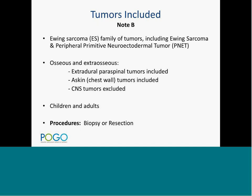Included under the current protocol is the Ewing sarcoma family of tumors, which includes Ewing sarcoma and peripheral primitive neuroectodermal tumors (PNET). The same protocol covers tumors arising from bone as well as those arising outside of bone, including soft tissues, chest wall tumors previously known as Askin tumors, parenchymal organs such as kidney, and extradural paraspinal tumors. CNS tumors are excluded as they are a different set of tumors.